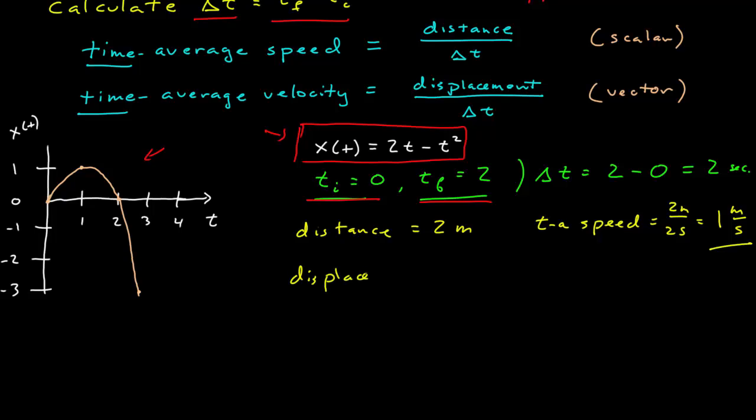What's the displacement? Remember, the displacement is the final position minus the initial position. The final position at t is equal to 2 seconds is 0. The initial position at t is equal to 0 is 0. Therefore, the displacement is 0 meters. And therefore, the time averaged velocity is 0 meters per second. So if the displacement is 0, the velocity is 0.